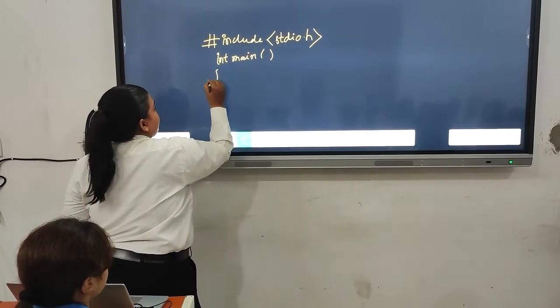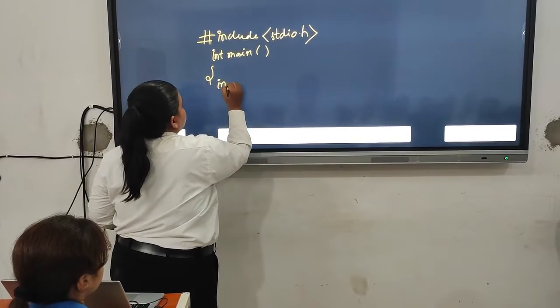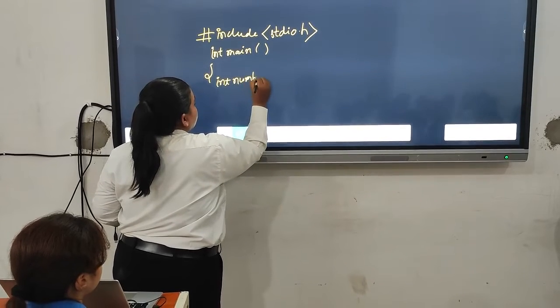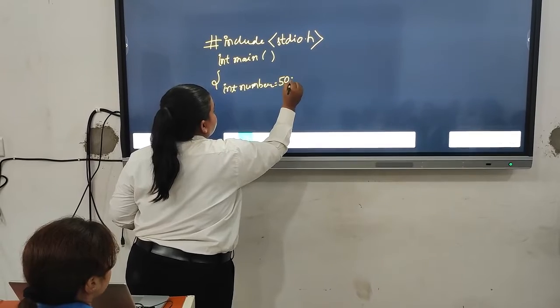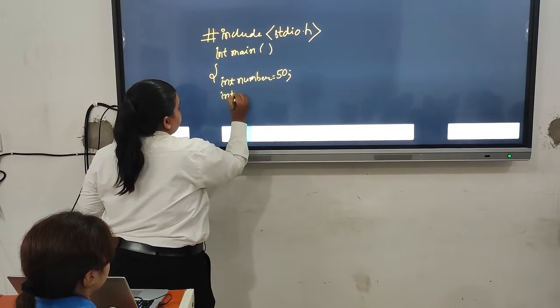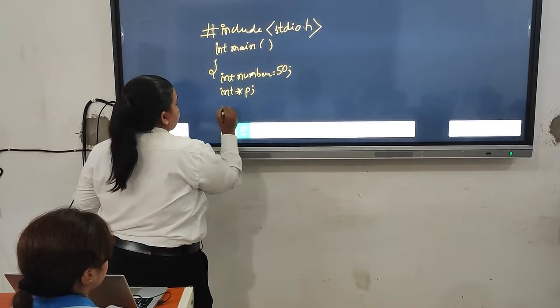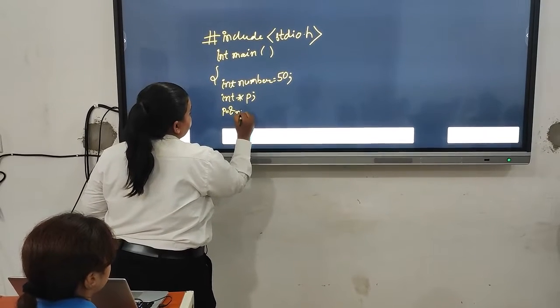Now we will give open curly brace. Now we will write int number equals to 50. Now what we will do? We will write int, we will define int asterisk p. p equals to ampersand number.